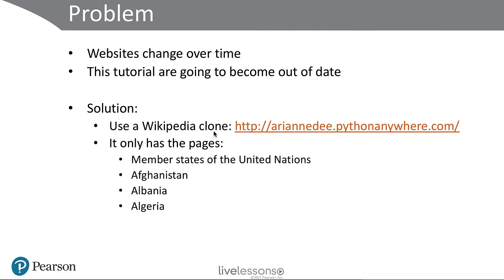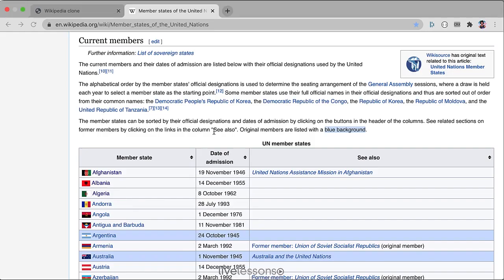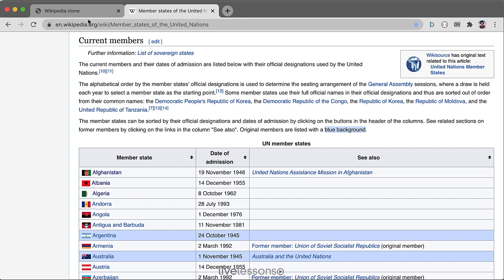But there's a problem, because websites change over time and this tutorial is going to become out of date pretty fast. In order to handle that, I've created a Wikipedia clone website that's hosted on the platform PythonAnywhere. I built a really simple Flask web application and copied some of the pages from Wikipedia into that application, so that it will be a static page, and the tutorial solutions will always work as long as the site is up.